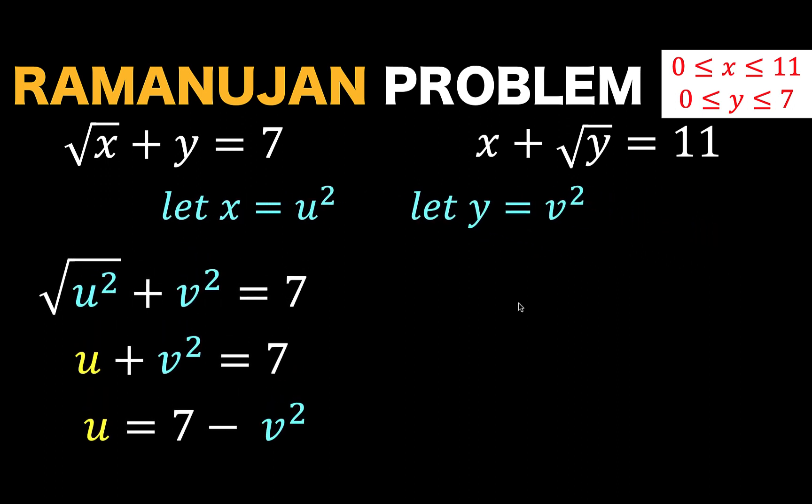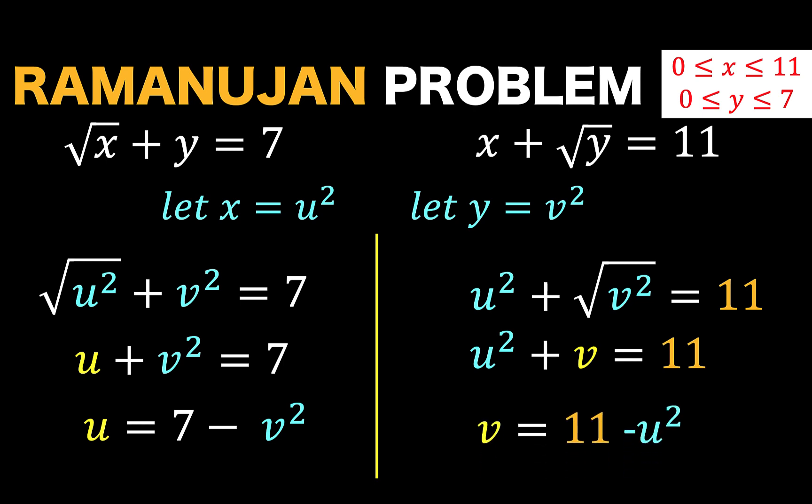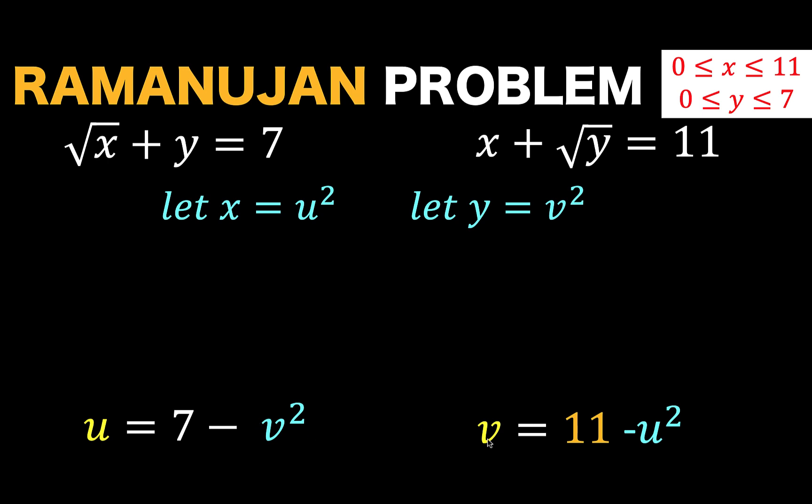Now, let's go to the second equation. We have x plus the square root of y equals 11. And, substituting now the values of x and y in terms of u and v, we now have u squared plus the square root of v squared equals 11. And so, u squared plus v equals 11. And v equals 11 minus u squared. And these are now the two equations that we are going to work with.